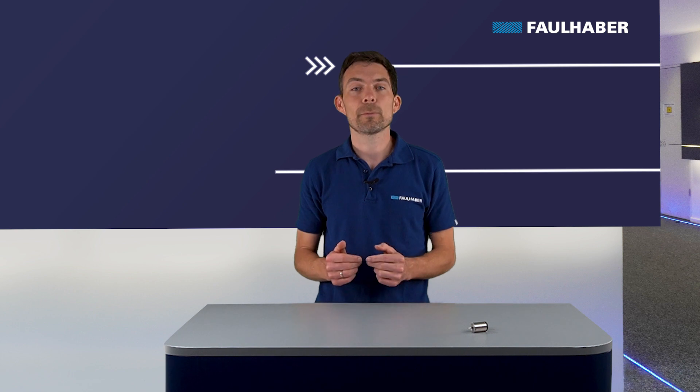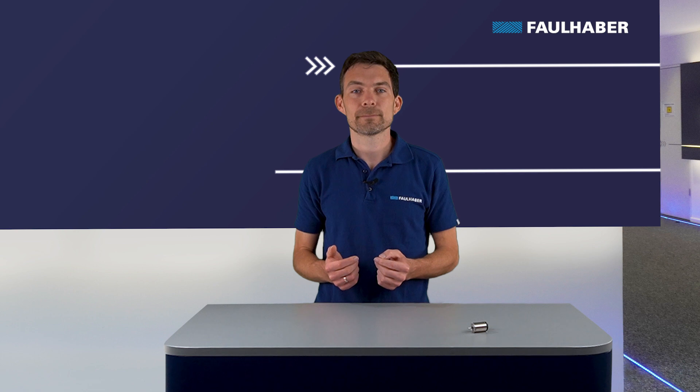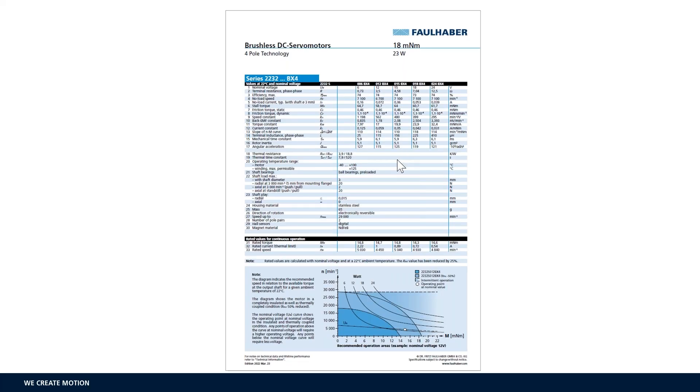In the performance diagram you will get an idea of the operating points that can be reached with this motor. Where do I find the performance diagram? Well, this is part of the Faulhaber motor datasheets which are published on the Faulhaber website. Here we can see the first page of the datasheet with the performance diagram.